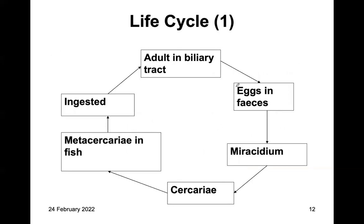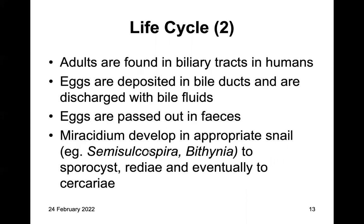Life cycle. This is the generic life cycle. Adults are found in the biliary tract, while for other parasites you're talking about adults in the gastrointestinal tract. Eggs are passed in feces and taken up by the miracidium in the snail, developing into sporocysts, then rediae, then cercariae, then metacercariae in fish, and then ingested. Adults are found in biliary tracts. Eggs are deposited in bile ducts and discharged with bile fluids.